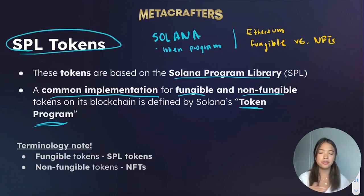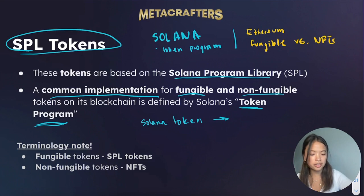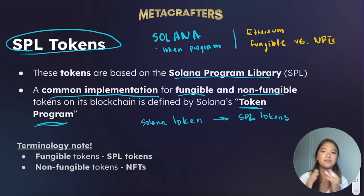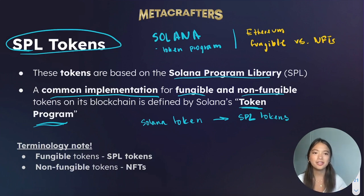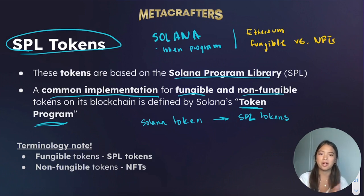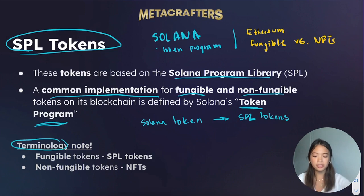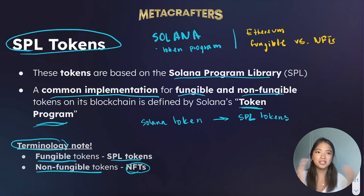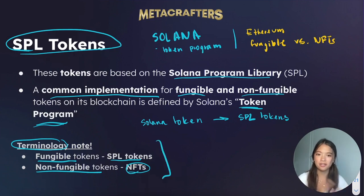Usually when you think of a Solana token, you think of SPL tokens. Technically speaking, both fungible tokens and non-fungible tokens on Solana are SPL tokens because they are both made through the Solana program library. However, when it comes to terminology, we refer to SPL tokens as just being fungible tokens, and we refer to non-fungible tokens as simply NFTs. Just keep this in mind as we move forward — this is the terminology standard for Solana tokens.